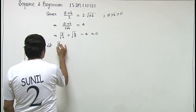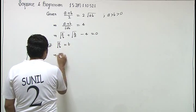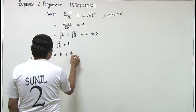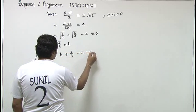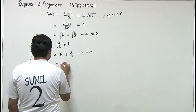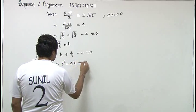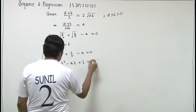So let root A upon B equal to T. So we have T plus 1 upon T minus 4 equal to 0. That is T square minus 4T plus 1 equal to 0.